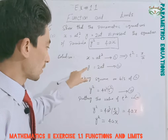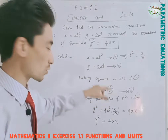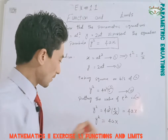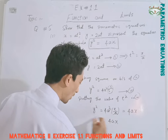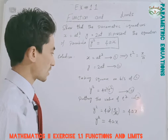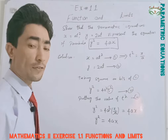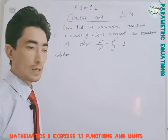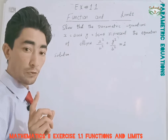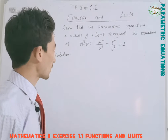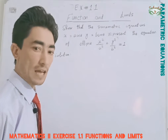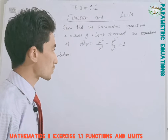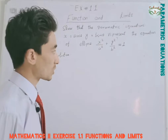After eliminating the parameter, we showed that y² = 4ax. This is the solution to question 5, part 1. Now part 2 is also straightforward: show that the parametric equations x = a cosθ, y = b sinθ represent the ellipse x²/a² + y²/b² = 1.